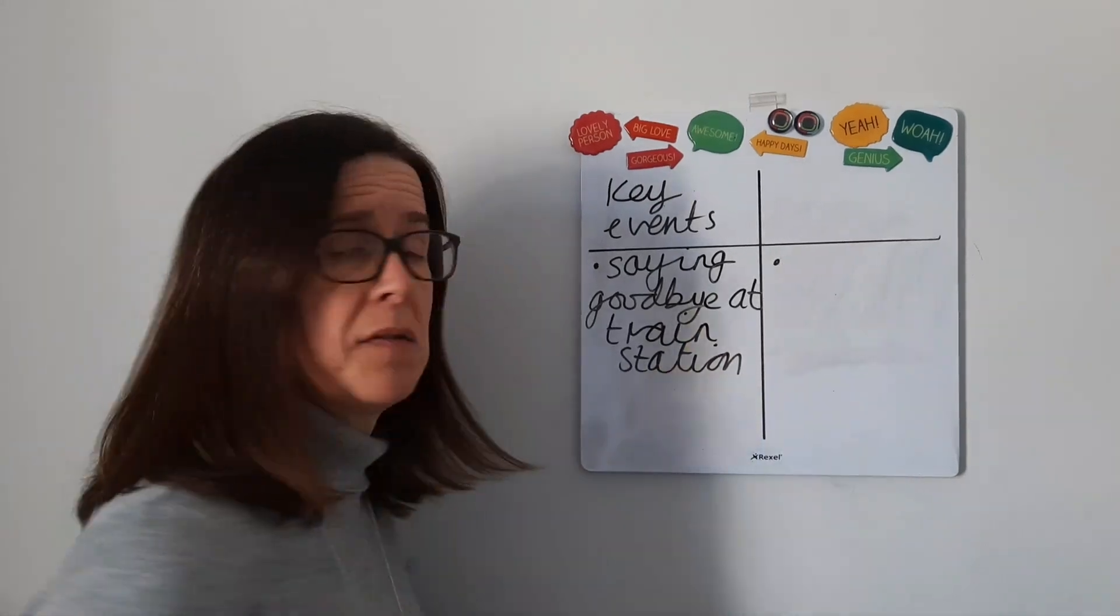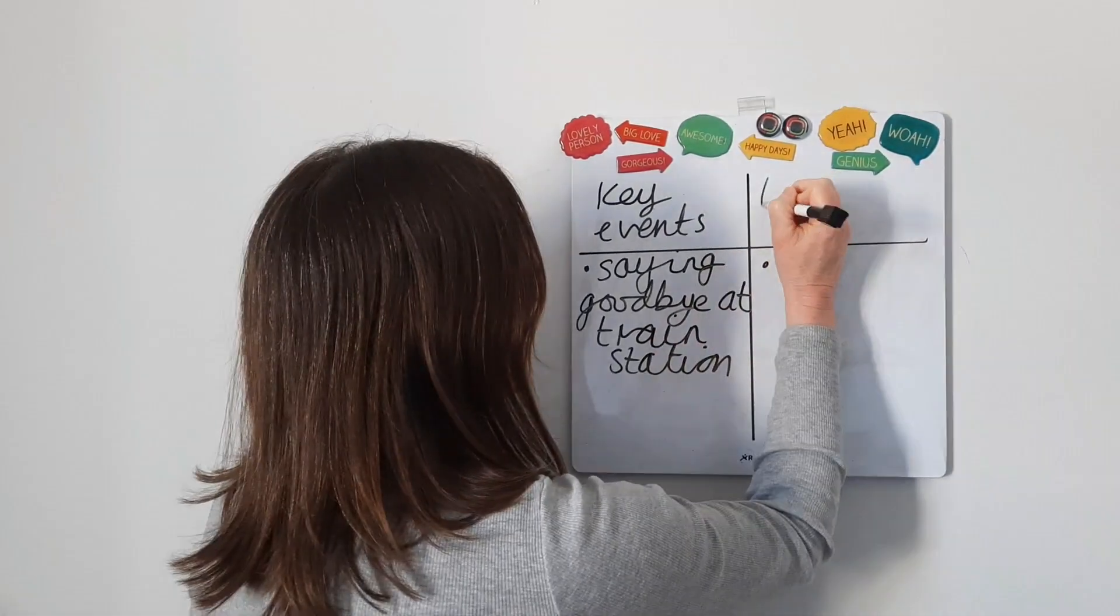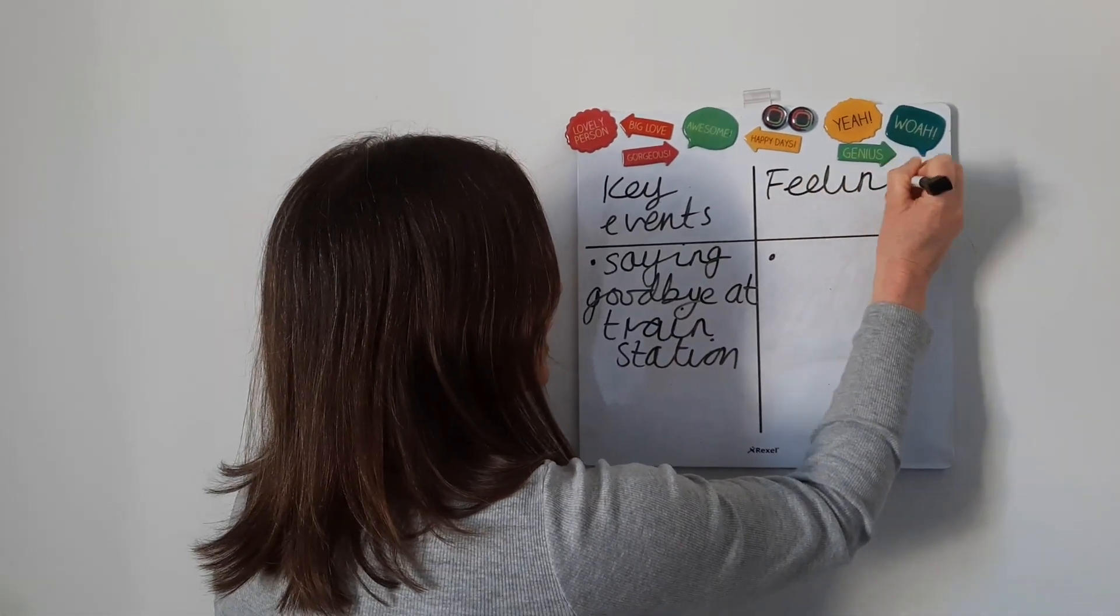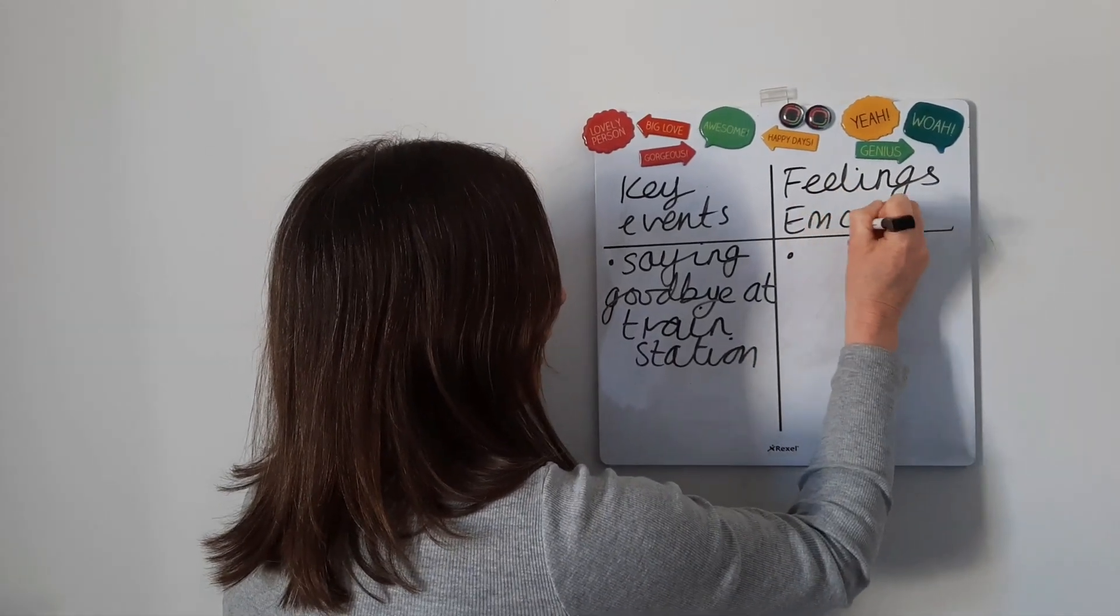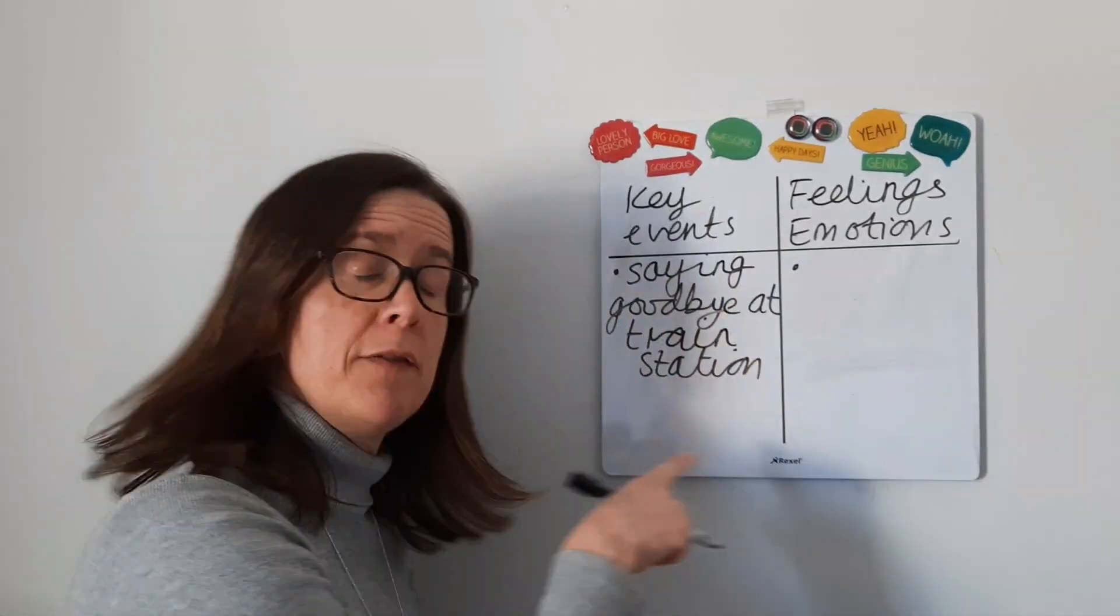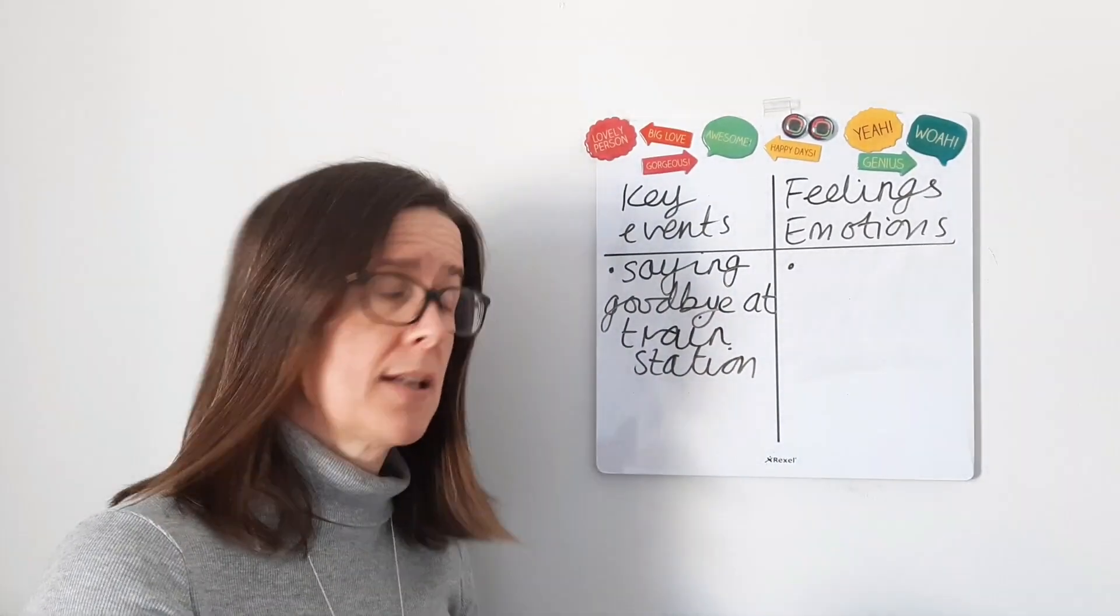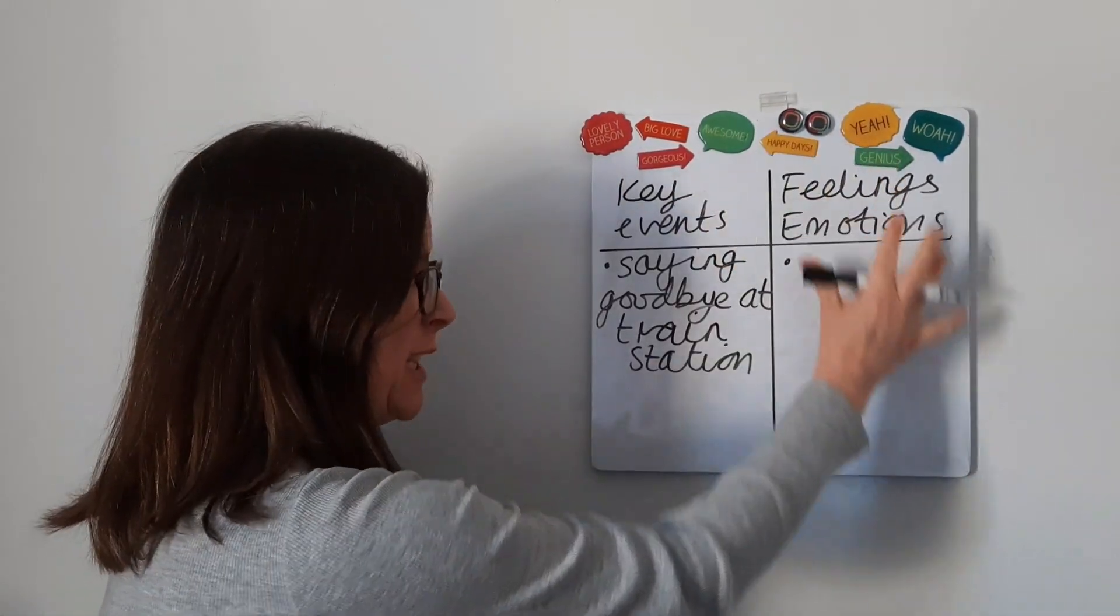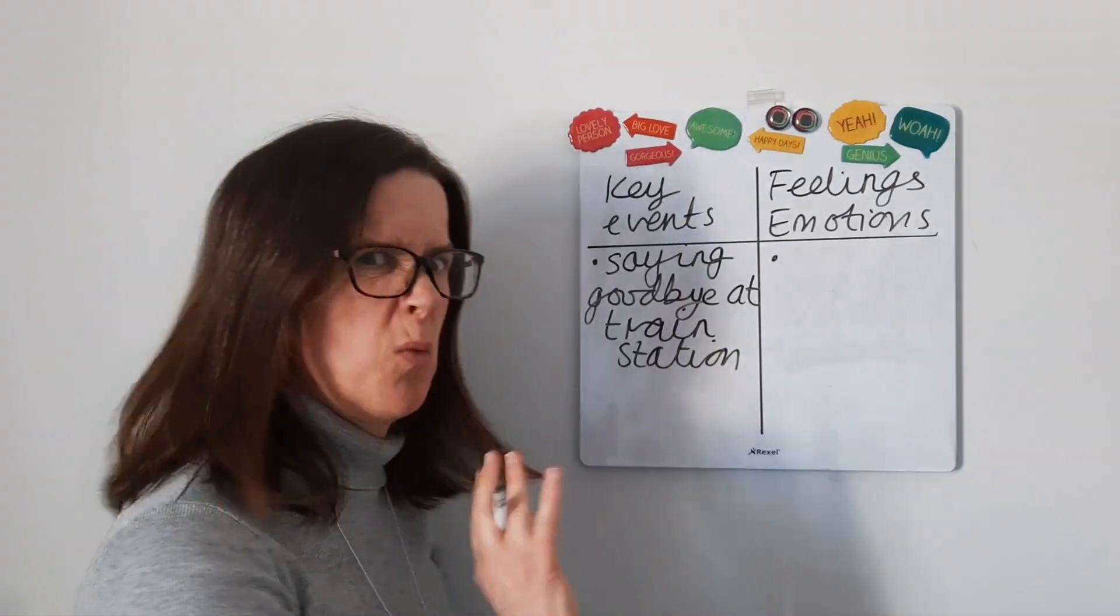For each key event that you write down, you're going to think about how the evacuees were feeling at that moment. How would you feel if that happened to you? I've given you some examples on the website and an example of what the table should look like, so don't worry if you can't remember all this.